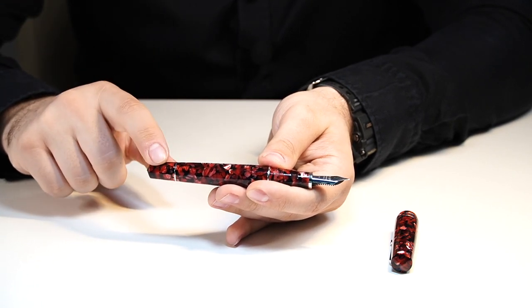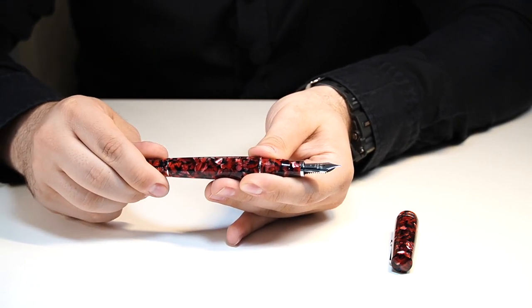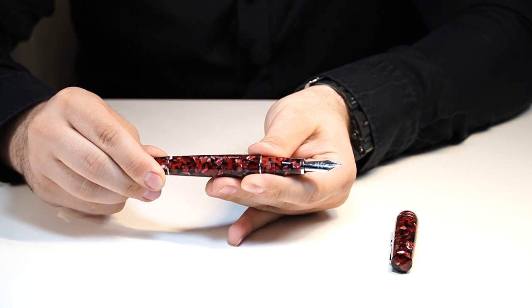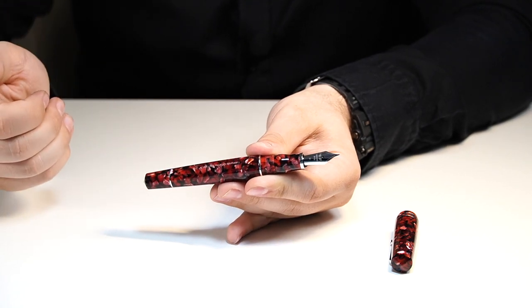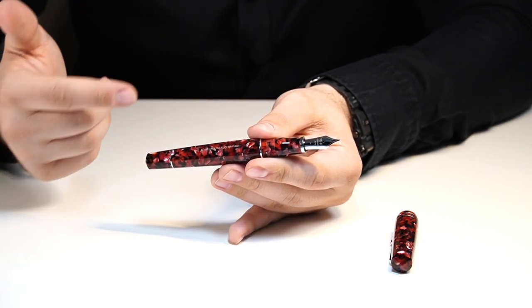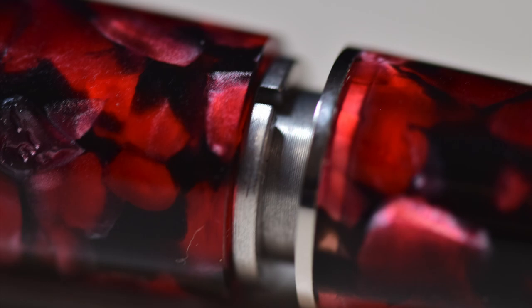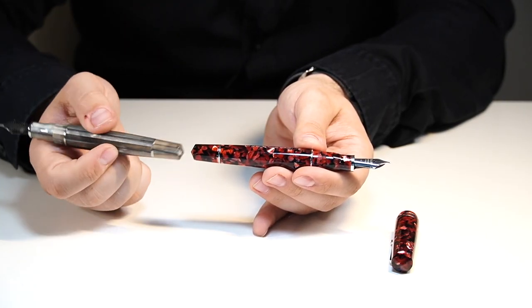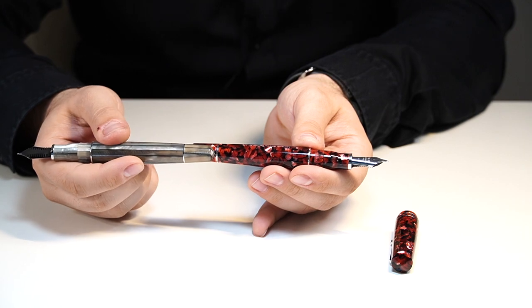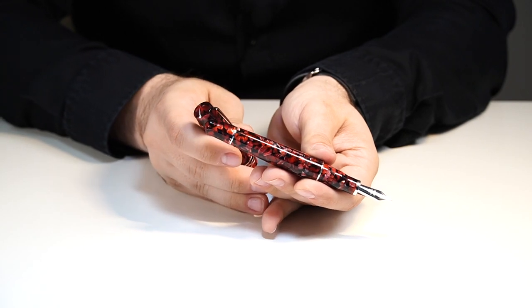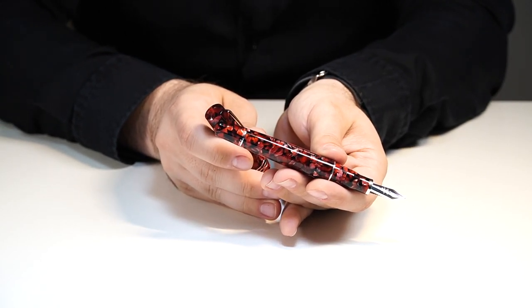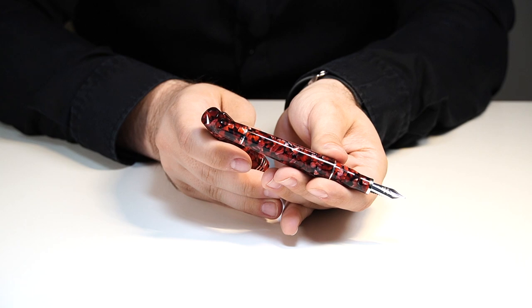Then we arrive at the piston knob, which is this one right here. And I'm trying not to unscrew and play with it too much because the pen is inked. And the end knob has the same shape as the one from the prior model and the same features as the finial of the cap.